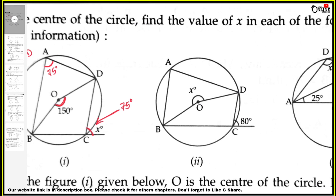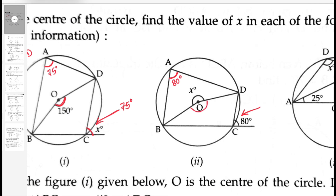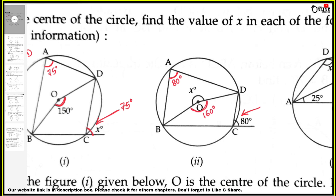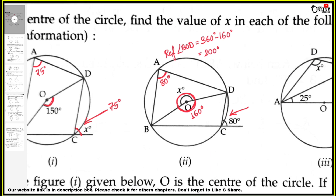Number 2: the exterior angle is 80 degrees, so the opposite interior angle is also 80 degrees. Now angle BOD will be double, so 80 doubled is 160. Now if we draw the full angle at center O, it is 360 degrees. The lower portion BOD is 160 degrees, so reflex BOD equals 360 minus 160, which equals 200 degrees. So X equals 200 degrees.